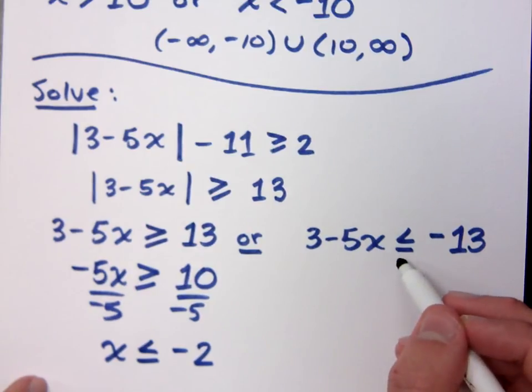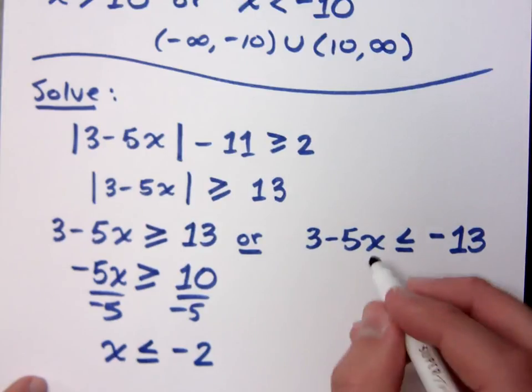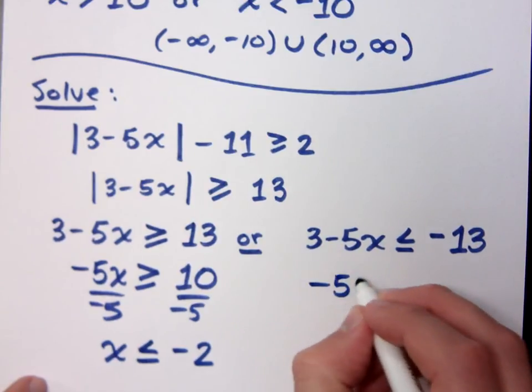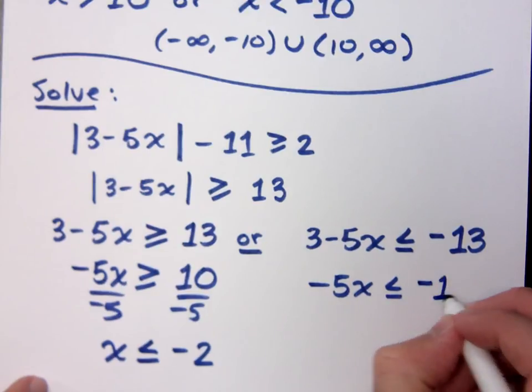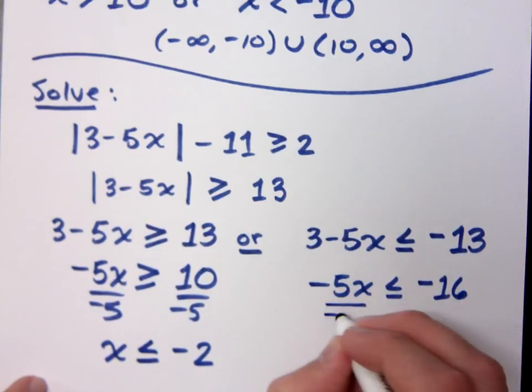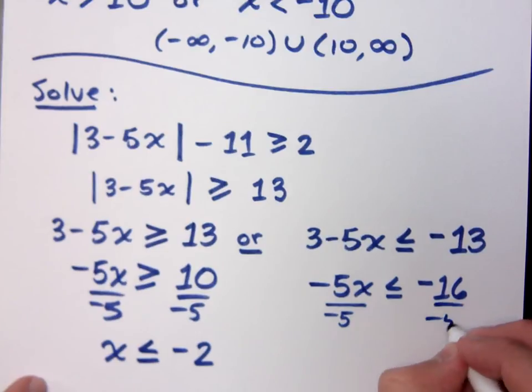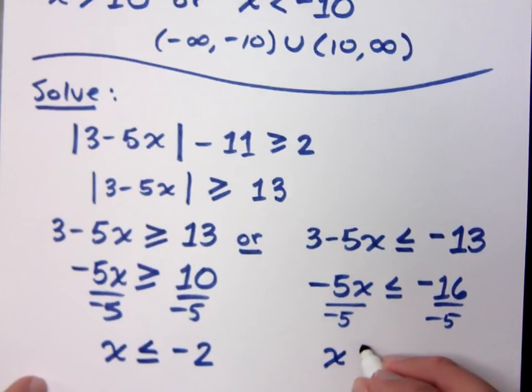What about this one? What would you do? Move the 3 to the other side, so we'll have negative 5x is less than or equal to what? Negative 16. Divide by negative 5, so x is what? Greater than or equal to... 16 fifths. Do you all agree?